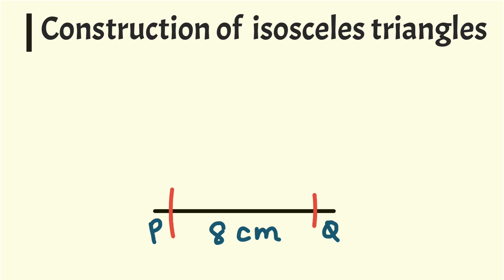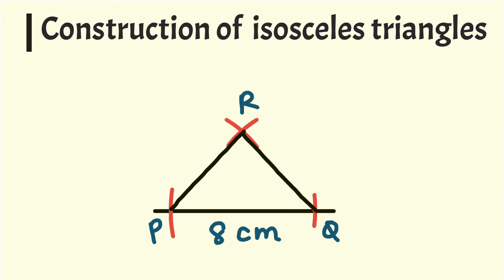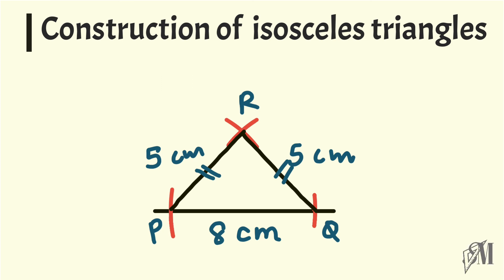Take five centimeters with your compass, keep it at Q and draw an arc. Then move your compass without changing the length to point P and cut the previous arc. This point of intersection is R. Join PR and QR. Both sides are five centimeters each. You can mark the two equal sides with tick marks. This is how you draw an isosceles triangle using the compass and straight edge.